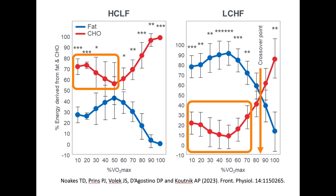Now look at the graph on the right that depicts subjects on a low-carb, high-fat diet. We notice that even though the energy derived from fat reduces again as exercise intensity increases, a clear crossover point can be identified, and it happens at 85% of VO2 max. This is in clear contrast with the figure on the left, where the elusive crossover point happens at approximately 50% of VO2 max. This shows that the macronutrient composition of the diet largely determines whole-body substrate preference.